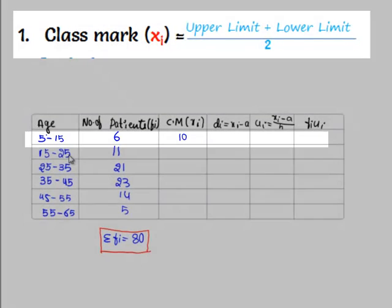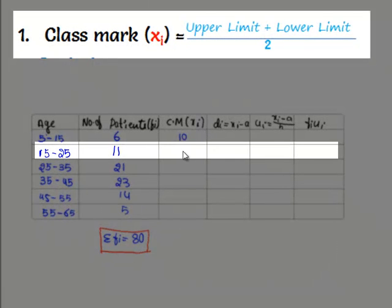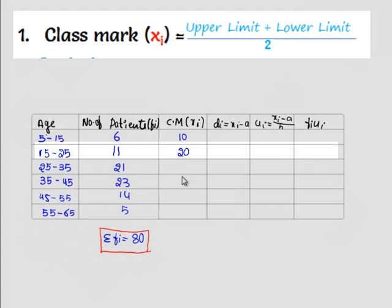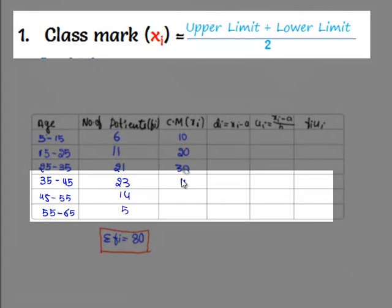15 plus 25 by 2 is 20. And similarly, if we see, we get 30, 40, 50, and 60.